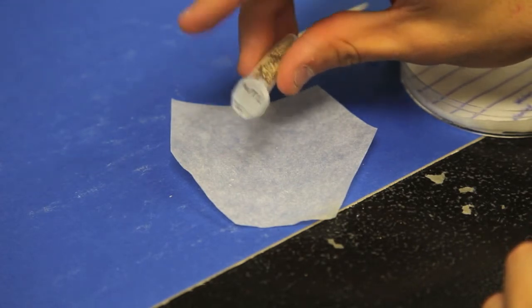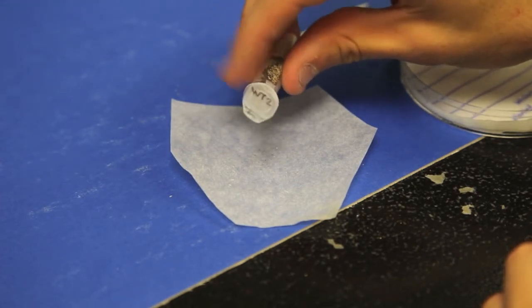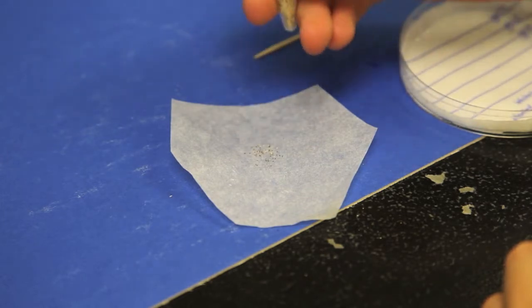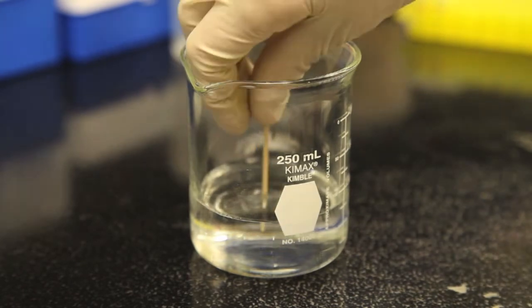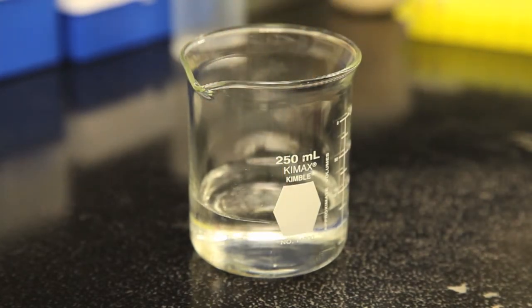First, sprinkle some seeds onto a piece of wax paper or regular paper. Be careful not to sprinkle too many. You can always add more if needed. Next, use a container of clean water to dip the very tip of a toothpick.